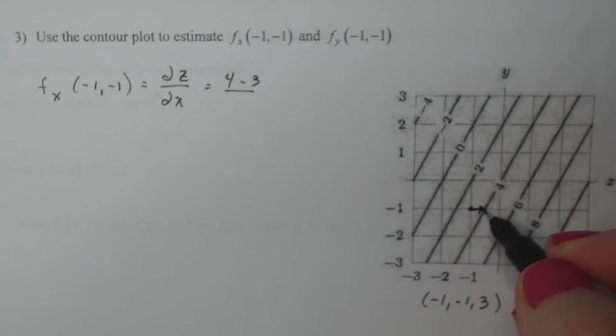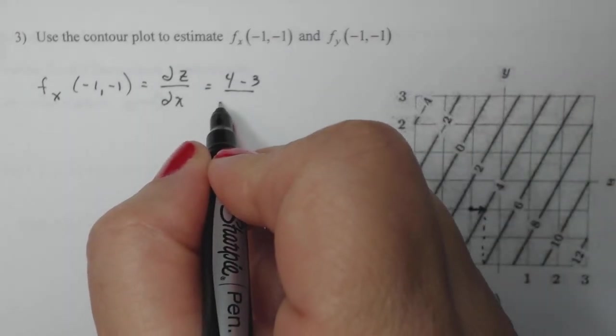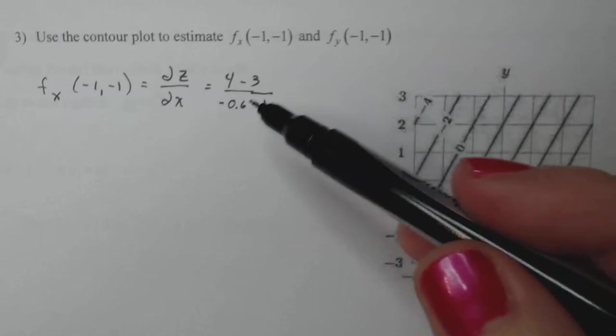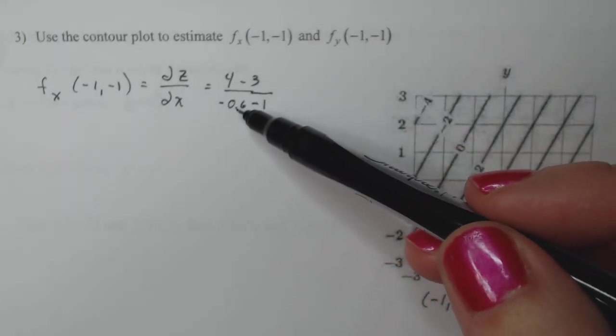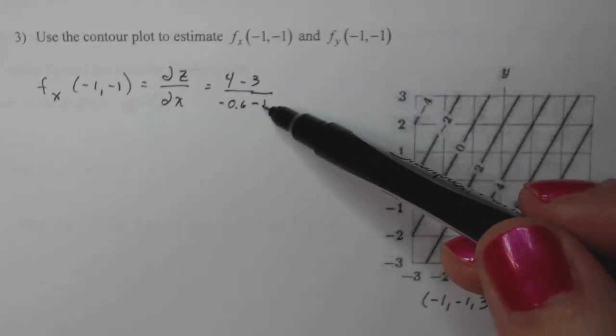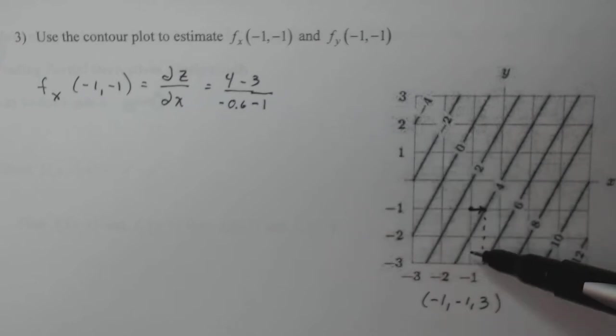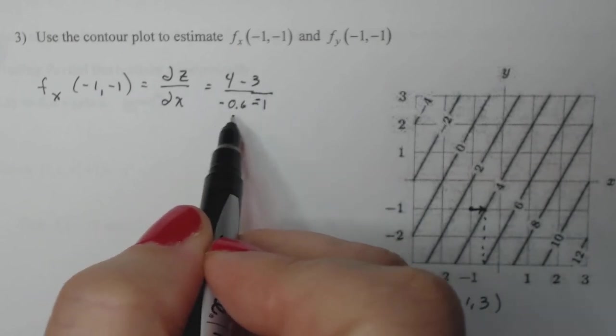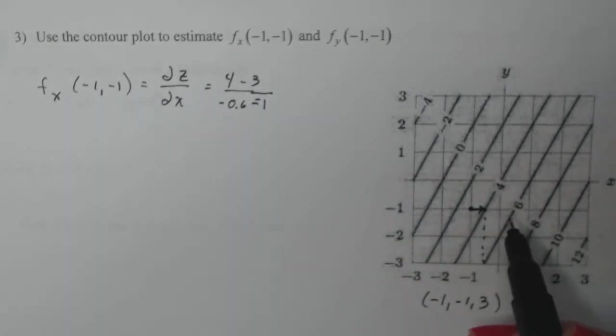And my new x is, well, it looks like if I come down here, it looks like it's almost half, negative 0.5, maybe negative 0.6 if you're going to be picky. So I've moved from minus one to negative 0.6. So this ordered pair, when x is negative 0.6, I'm at z equal four. When I'm at x equal negative one, I'm at three. So it's the difference in the z's over the difference in the x's with a small change, like right to the next contour.